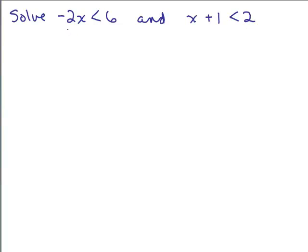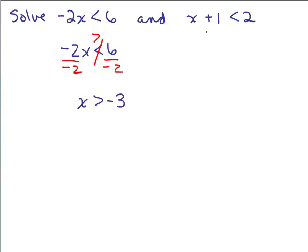Let's do this. For the first one, be careful: when you have negative 2x is less than 6, you divide by a negative number, so you have to switch the inequality sign — it becomes greater than. So that means x is greater than negative 3. For the other one, we subtract 1 from both sides, so we have x is less than 1.